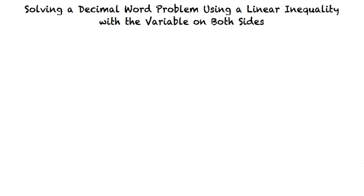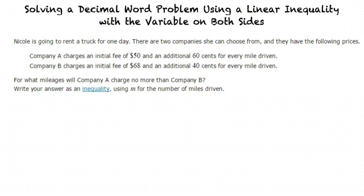Let's take a look at our given problem and figure out how to solve it. Nicole is going to rent a truck for one day. There are two companies she can choose from with the following prices: Company A charges an initial fee of $50 and an additional $0.60 for every mile driven. Company B charges an initial fee of $68 and an additional $0.40 for every mile driven. For what mileages will Company A charge no more than Company B? Write your answer as an inequality using M for the number of miles driven.